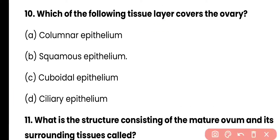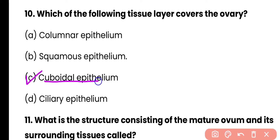Question 10: Which tissue layer covers the ovary? Options: columnar epithelium, squamous epithelium, cuboidal epithelium, or ciliary epithelium? Correct answer is option C. Cuboidal epithelium covers the ovary, which is also known as germinal epithelium.